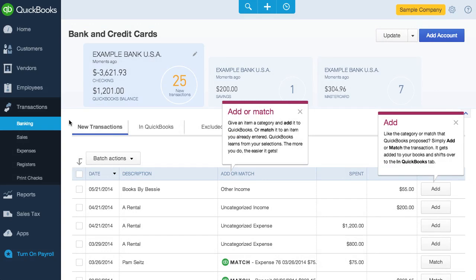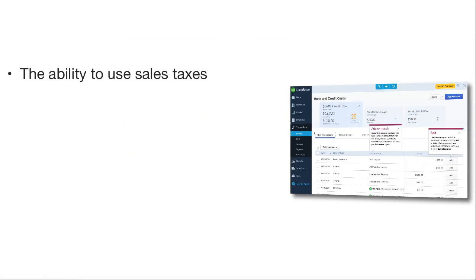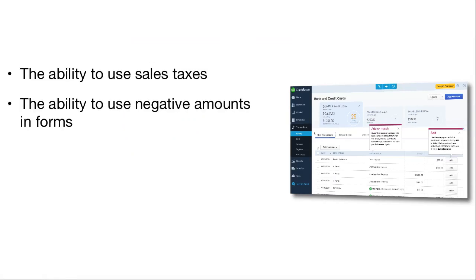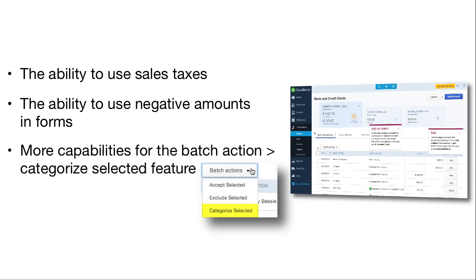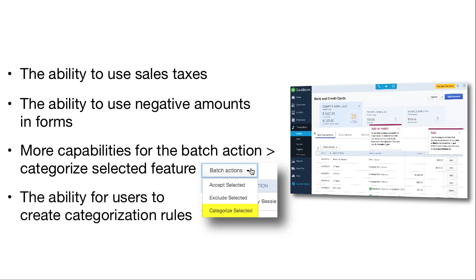In general, I like the banking page, but here's a quick summary of improvements I believe would help: the ability to use sales taxes; the ability to use negative amounts in forms; the expansion of the categorized selected batch action so you could do more than select a category — it would be great to have the ability to select details such as payee, memo, and even line items. Probably the biggest improvement would be if QBO allowed users to control the rules used to categorize transactions. Xero and Zoho Books allow this, and it leads to less data entry and more accurate results.